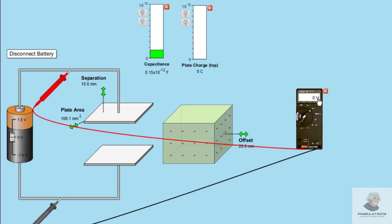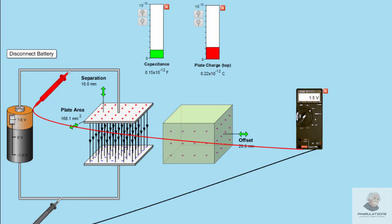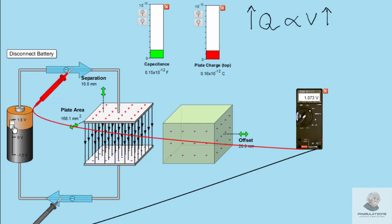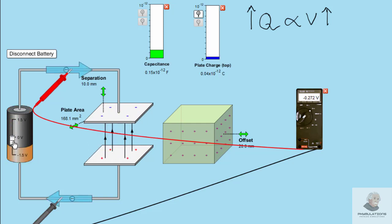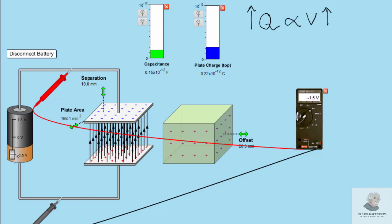During this process, observe two things. First, observe this graph: when we increase the voltage, the charge on the plates increases. So we have the relation that Q is directly proportional to V. As we increase the voltage, the charge on the plates of the capacitor grows. If we decrease the voltage, the charge also decreases. And if we change the polarity of the battery, the charge again rises. So it doesn't matter which way you connect the battery — charge is directly proportional to voltage.